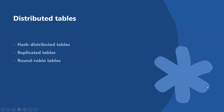Let's talk about distributed tables — replicated tables and round robin tables. A fundamental feature of SQL pool is the way it can store and operate on tables across distributions. SQL pool supports three methods for distributing data: hash distributed, replicated, and round robin tables. If we don't specify a distribution, by default it creates round robin.